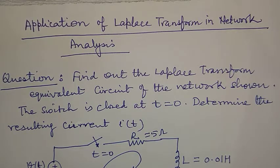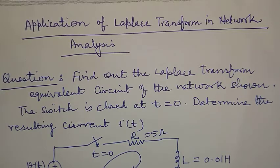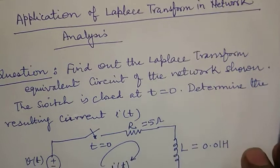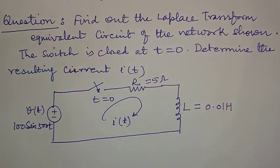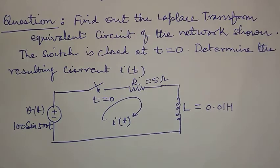The switch is closed at t equal to 0. Determine the resulting current I(t). In this question, there are two questions. First is the Laplace transform of the equivalent circuit shown in this figure. And second is the resulting current I(t). So first of all, we will try to obtain the Laplace transform equivalent of the network shown.